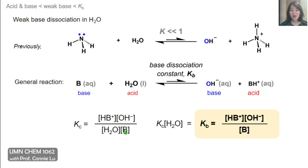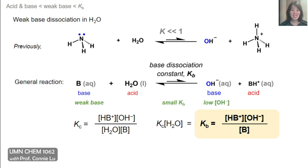And just like with Ka, the concentration of water as a solvent doesn't really change. So we can simplify this equilibrium expression by removing water and just leaving behind the conjugate acid times hydroxide over the weak base. And this equality is equal to the base dissociation constant, Kb. The characteristic of a weak base is that you're going to have a very small Kb value.